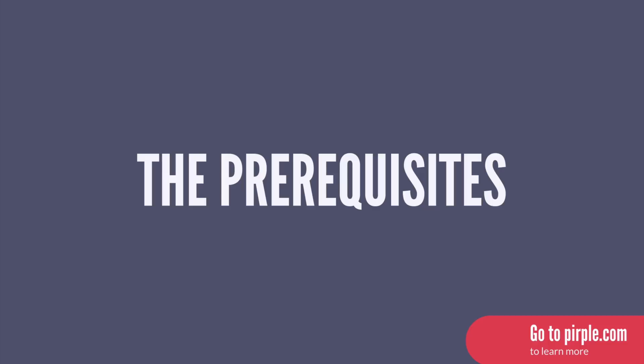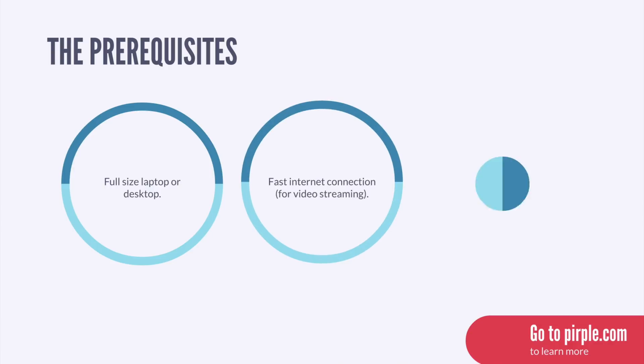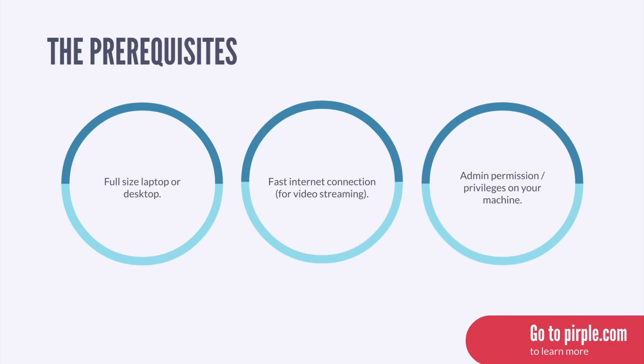So what are the prerequisites? This is a beginner-level course, which means you don't need any programming experience at all. But you must have access to a full-size laptop or desktop with a modern browser and a fast internet connection, and you must have permission to install software like RStudio on the workstation you're using. This is not the kind of class you can take or pass on your phone — you're going to be working with large datasets and you'll need a real development machine.